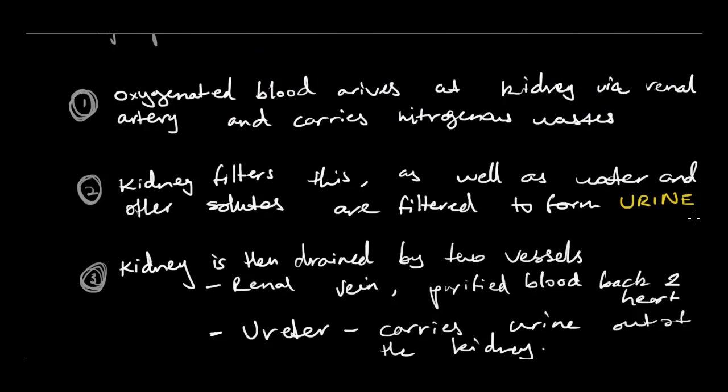To summarize: first, oxygenated blood arrives at the kidney via the renal artery and carries nitrogenous wastes. Arteries are the red vessels carrying blood away from the heart, and this blood already carries nitrogenous waste from the cells and all the build-up. Secondly, the kidney filters this blood — wastes and other solutes are filtered out to form urine.